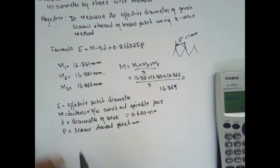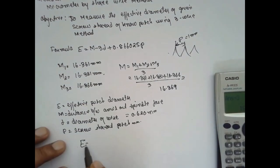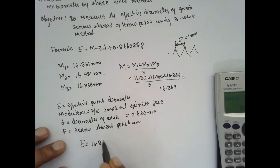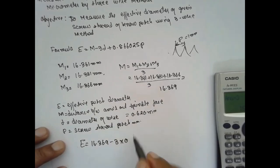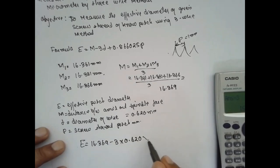Now after knowing m, substitute in the formula. E equals 16.369 minus 3 times 0.6620 plus 0.866025. P is 1.